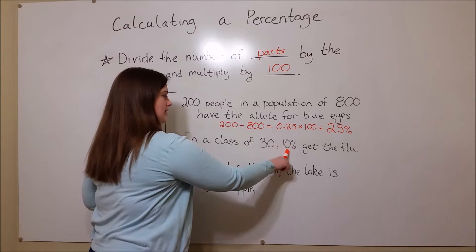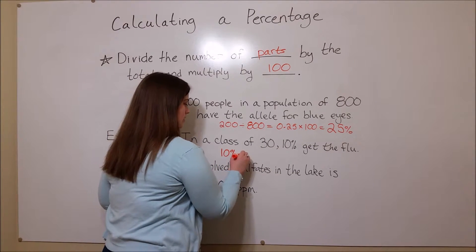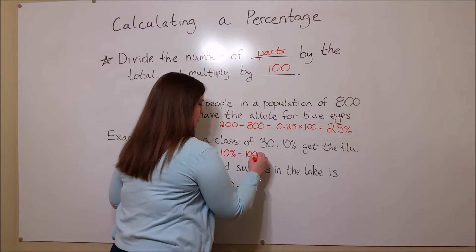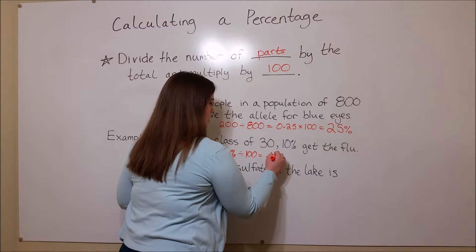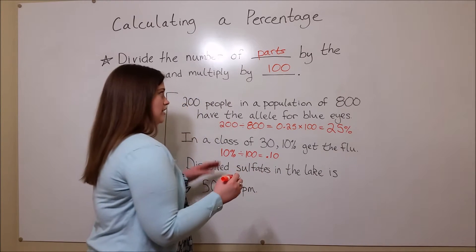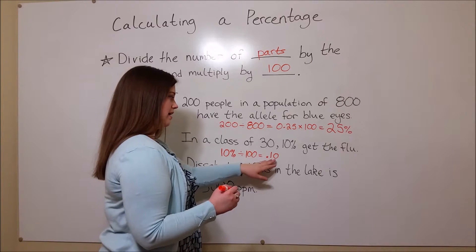And this is how you do that. 10%, if we're working backwards, divided by 100 equals 0.10, and so now we've got this proportion here, the parts divided by the total.